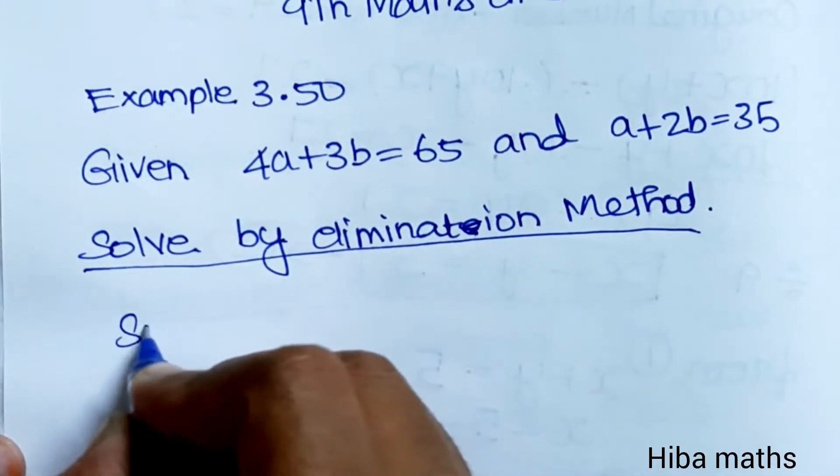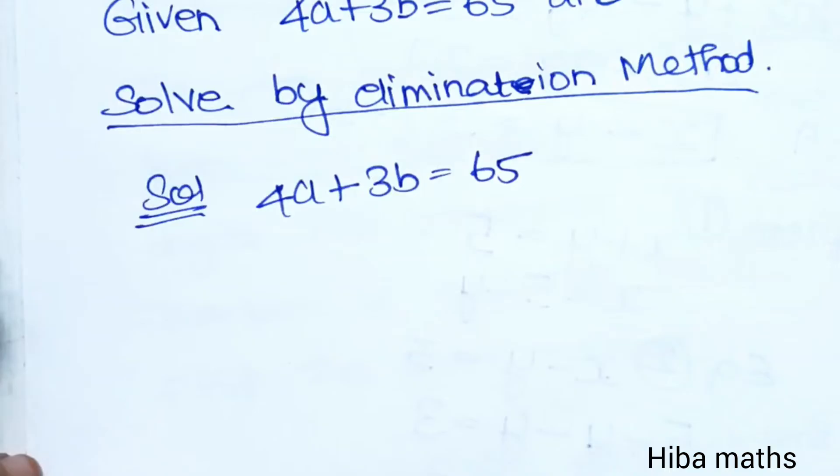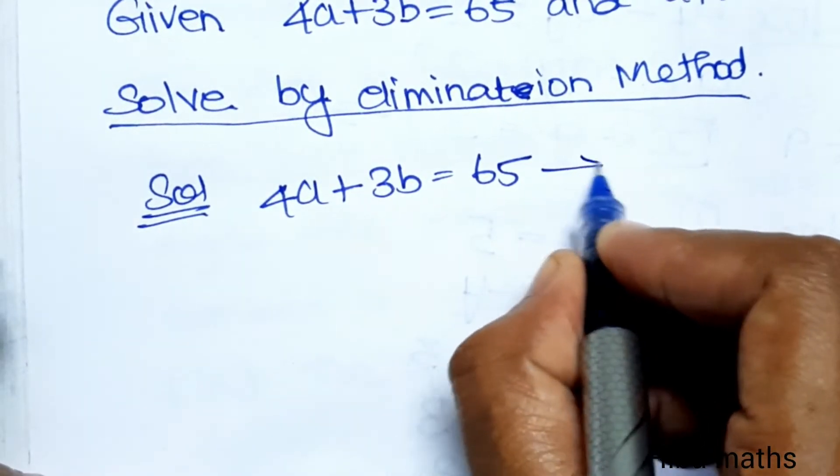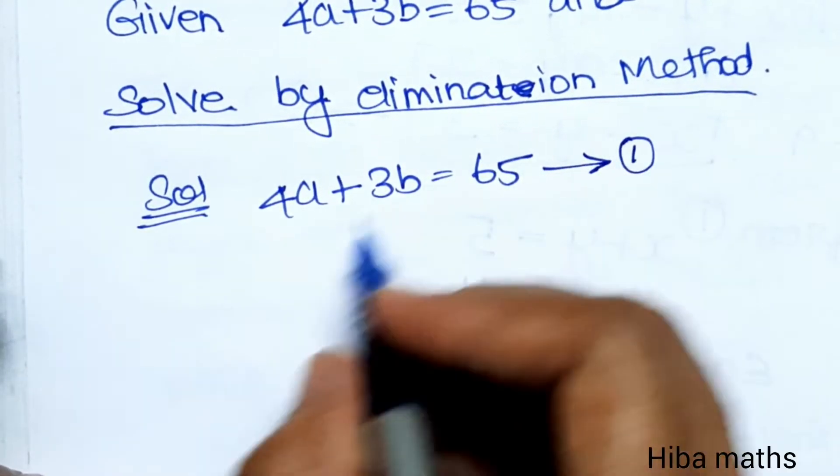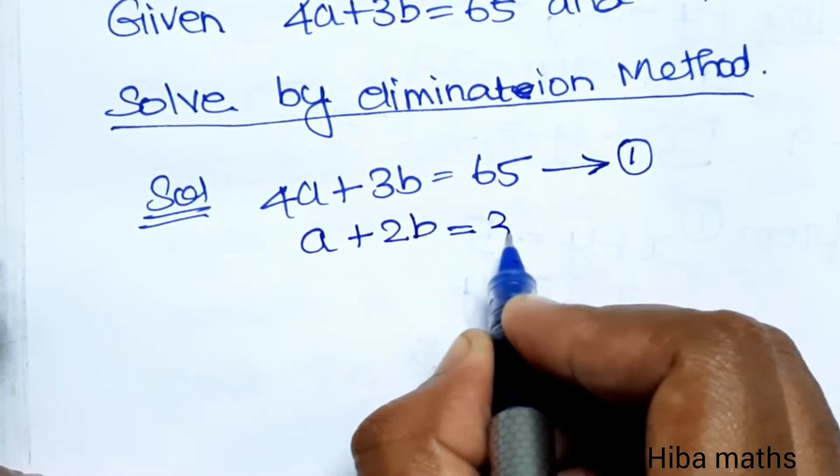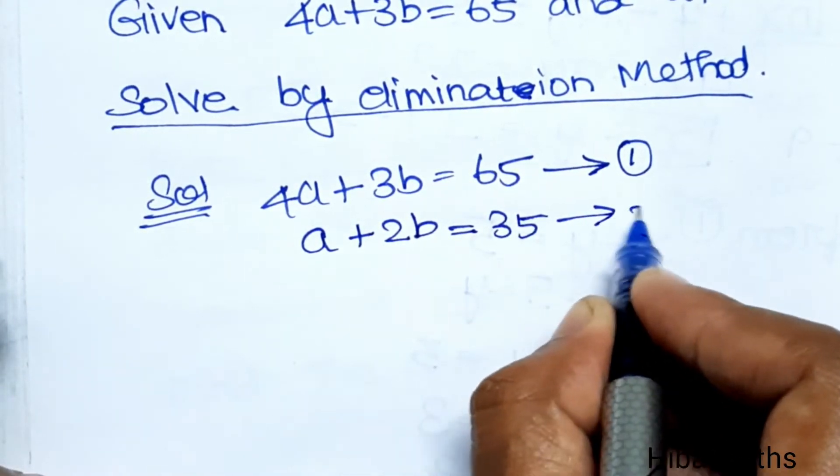In the solution, the question is 4a plus 3b equals 65, this is the first equation. The second equation is a plus 2b equals 35.